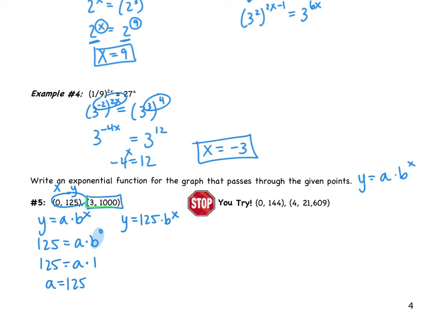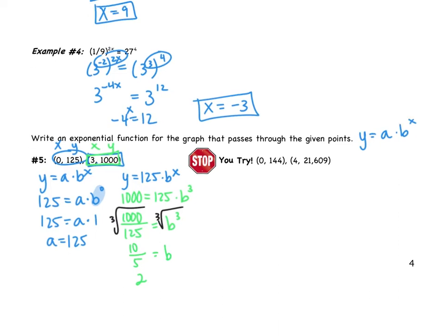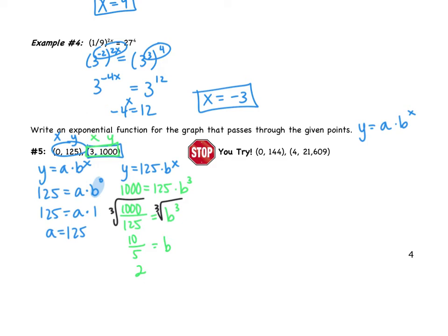So now I have y = 125·b^x. Now is where I can use the second point. The second point, same idea. I'm going to put three in for my x and a thousand in for my y. So I get 1000 = 125·b^3. So I have 1000 divided by 125 is equal to b^3. This one's a little trickier. I have to get rid of that third power. Well, to undo a third power, I can do a third root. So if I do this in the calculator, I should get the cube root of 1000 is 10. The cube root of 125 is 5. So I get b to be 2. Now remember, your answer should be an equation. So this is not our answer yet. We need to write our final answer as an equation: y = 125·2^x.